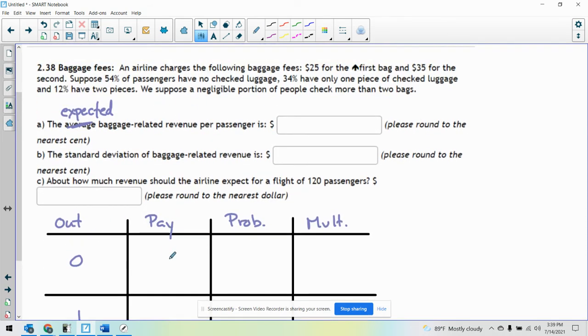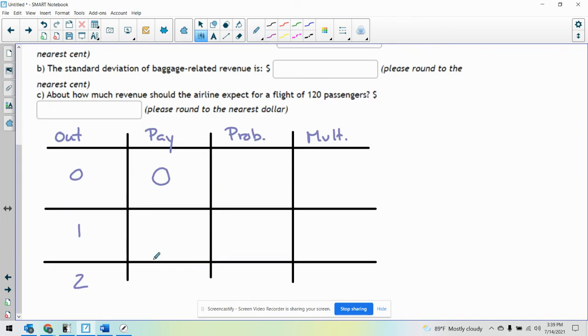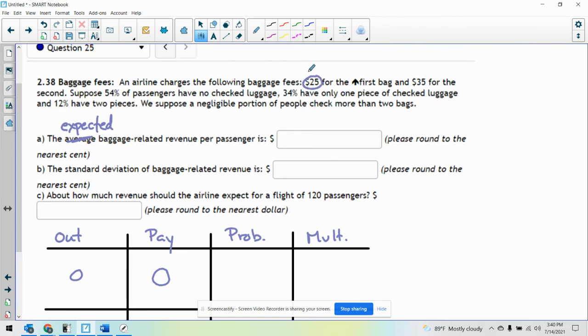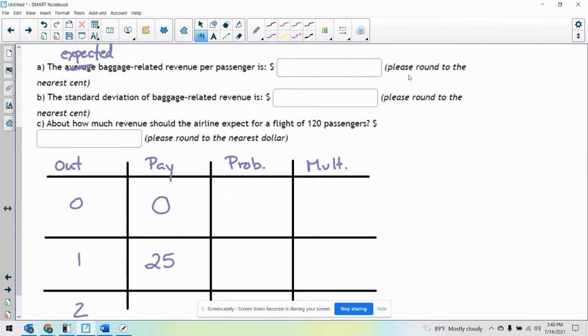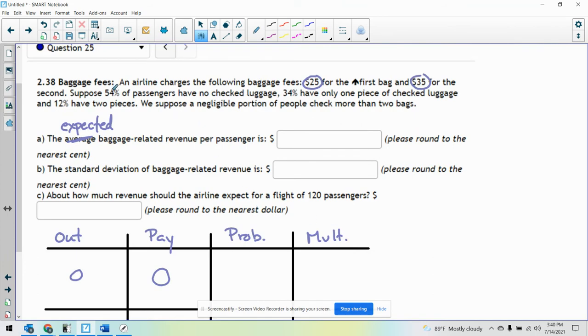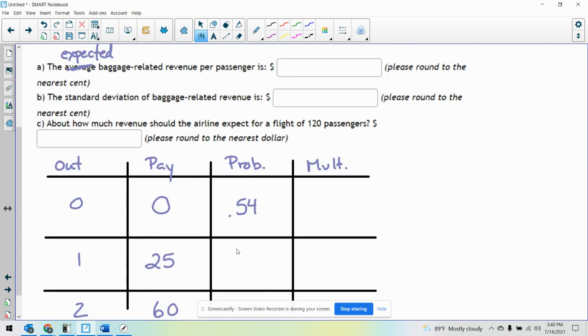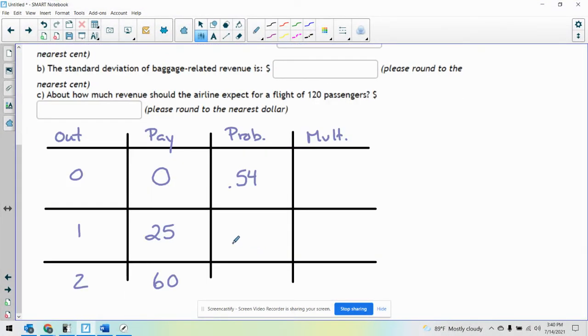The people who have zero checked bags pay nothing. So we get zero money from them. The people who have one checked bag will pay $25 for the first bag. So this is $25 per person. How much does the airline get for each person that has two checked bags? Well, they're paying $25 for the first bag, $35 for the second. So the airline is actually making $60 for each person. Probability that a person checks zero bags is 0.54. Checks one piece would be 0.34. Checks two would be 0.12.